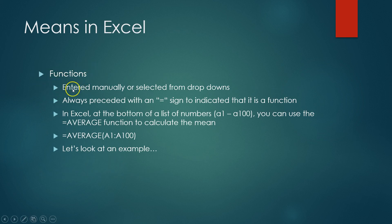A little bit more about functions. They're entered manually or you can select them from dropdowns. There are dropdowns in some of the menus where you can just pick the function that you want. They're always preceded with an equal sign to indicate that it is a function. In Excel, at the bottom of a list of numbers, you can use the average function to calculate the mean. I showed you just now. It wasn't 100 numbers. It was only 13. And this would be the function that you would use if you actually had 100 numbers. We already looked at an example, so we'll move on.